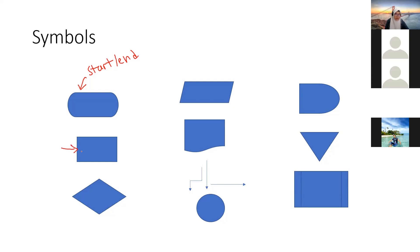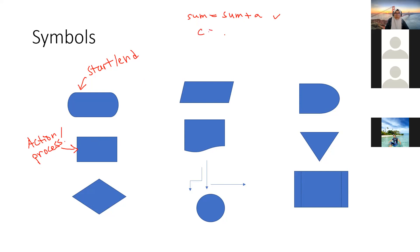What is the rectangle? The rectangle is for action or process. What does that mean? For example, 'sum equals to sum plus e' — that is a process, an action. Another example: 'c equals to one plus plus.' That is an action, a process. It represents any calculation or computation that we do.